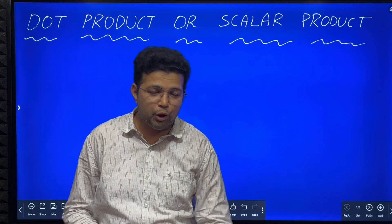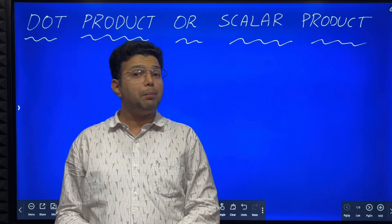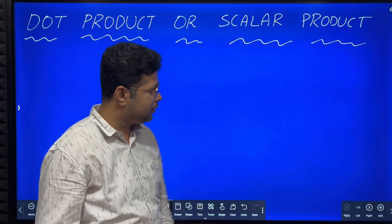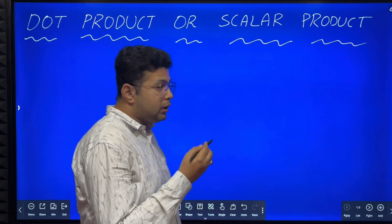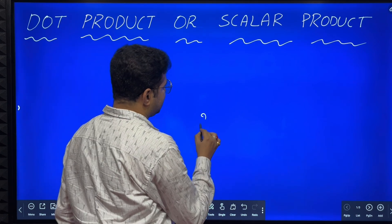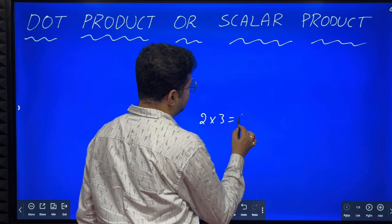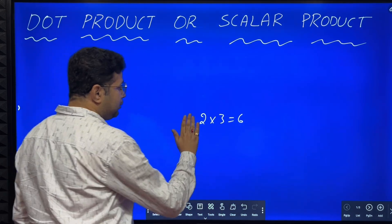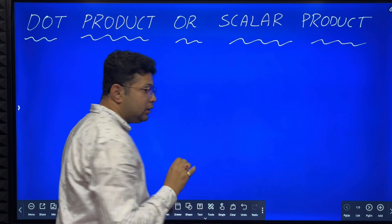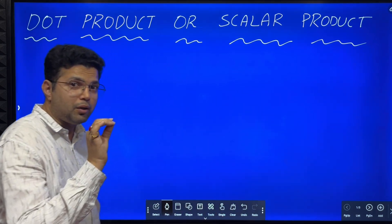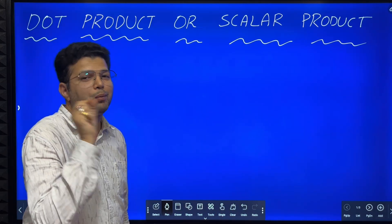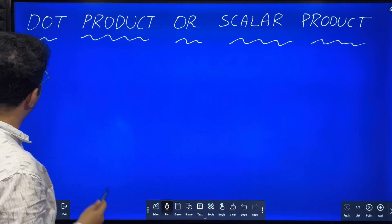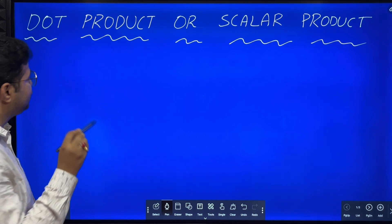Hello everybody. In today's session we are going to learn about multiplications of vectors. In the previous session we have studied how to add two vectors. Multiplication of two vectors is not like simple multiplication — 2 into 3 equal to 6, it is not like that. In the case of multiplication of vectors, there are two types: one is dot product of two vectors, the other is cross product of two vectors. In this session we are going to study about dot product of two vectors.